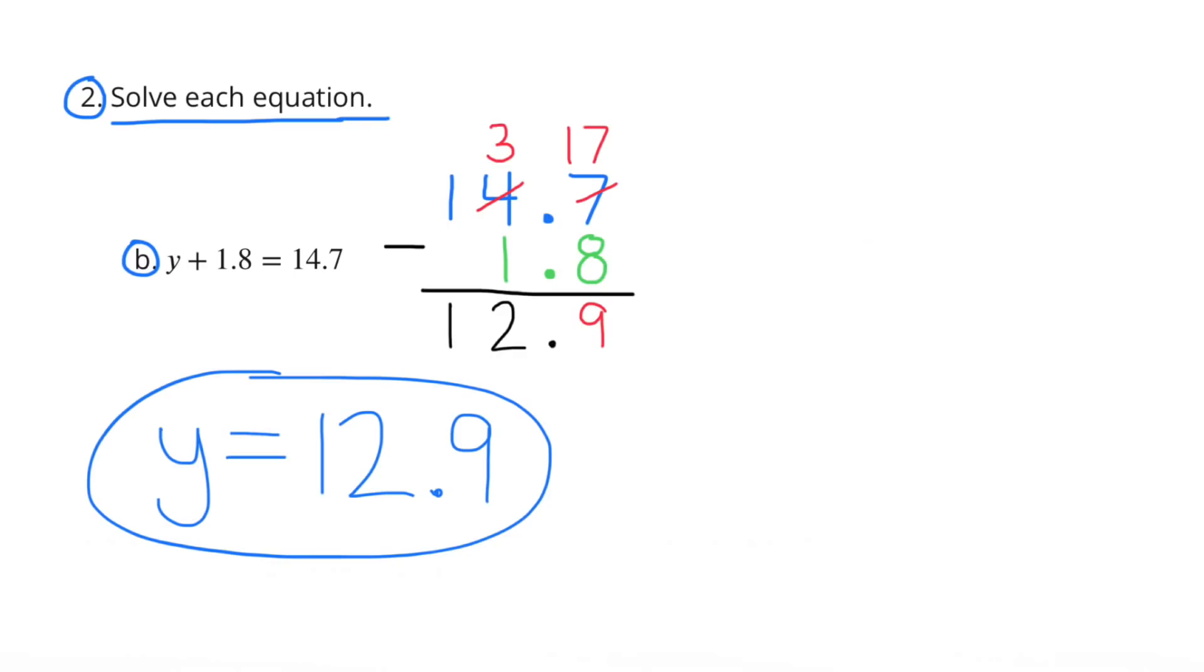Problem B: y plus 1 and 8 tenths equals 14 and 7 tenths. And I got 12 and 9 tenths. y equals 12 and 9 tenths.